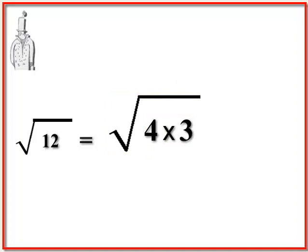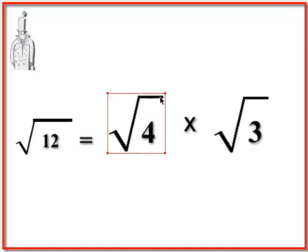So in other words, the square root of 4 times 3 is the same as the square root of 4 times the square root of 3. And I hope you can see where we're going with this. 3 does not break down, but 4 is 2 squared, right? And the square root of 2 squared is just 2.